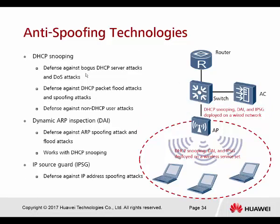The anti-spoofing technology includes: DHCP snooping, used to defend against bogus DHCP server attacks, DOS attacks, DHCP packet flood attacks, and spoofing attacks, as well as defense against non-DHCP user attacks. DAI (Dynamic ARP Inspection) defends against ARP spoofing and flood attacks — this must be enabled together with DHCP snooping; you cannot enable DAI alone. You must start DHCP snooping first, then enable DAI. The last is IPSG, which defends against IP address spoofing attacks.